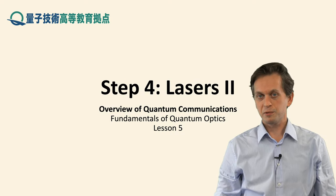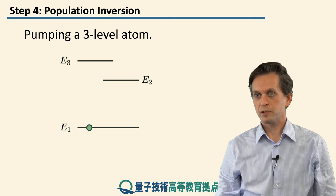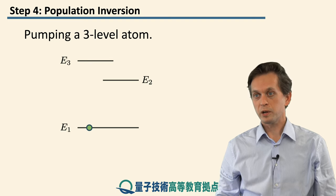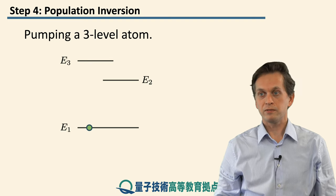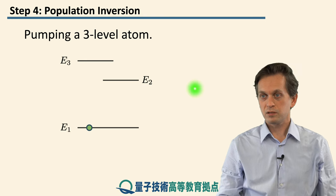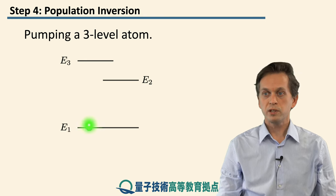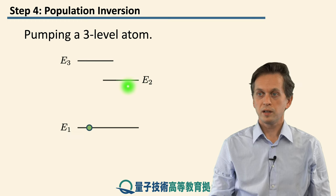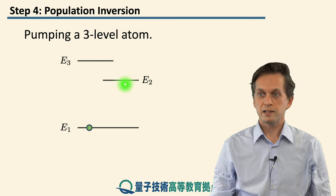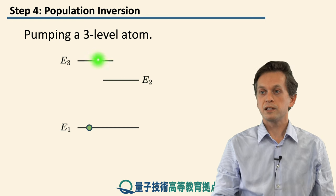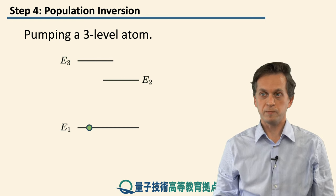Step four, lasers too. So we said in the previous step that in order to create population inversion, we require a three-level atom. So this is our new atom. It's got three levels, and we renamed the ground state to E1. The previous excited state was E2, and then there's another level of higher energy which we are going to call E3.